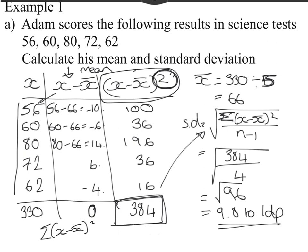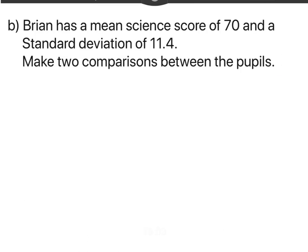That is actually to one decimal place. If they don't mention rounding, I would urge you to do one or two decimal places, never the nearest whole number. So that is our first example. Part b follows on from this answer. Obviously this means absolutely nothing unless we've got another number to compare it to. Adam's friend Brian does the same science tests but he has a mean score of 70 and a standard deviation of 11.4.